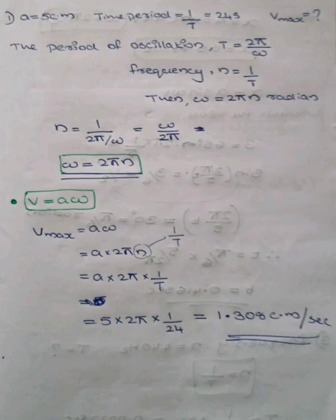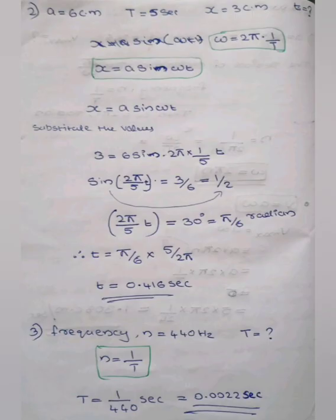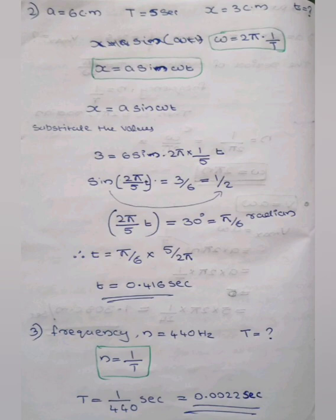The second question: a particle vibrates with Simple Harmonic Motion of amplitude 6 cm and a period of 5 seconds. How long does it take to move from one end of its path to a position 3 cm from the equilibrium position on the same side? Amplitude A equals 6 cm, time period T equals 5 seconds, and displacement x equals 3 cm.